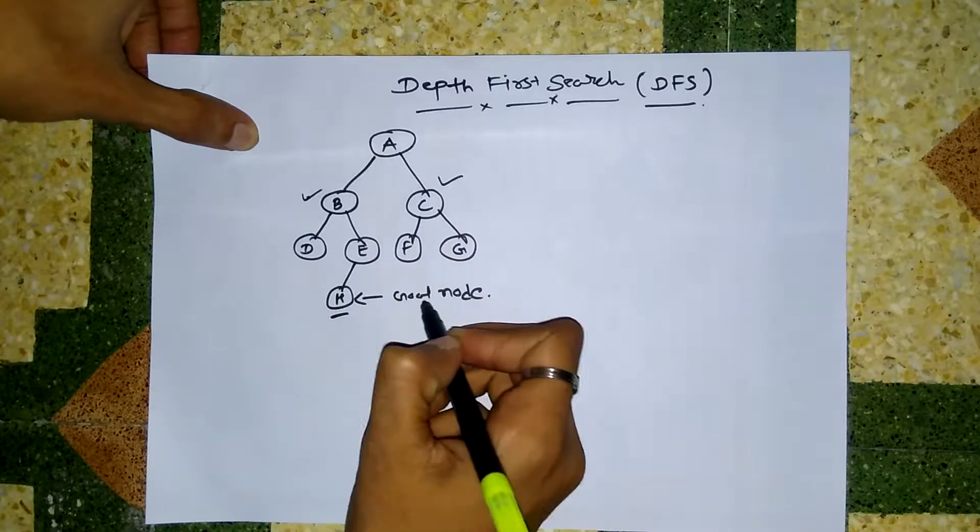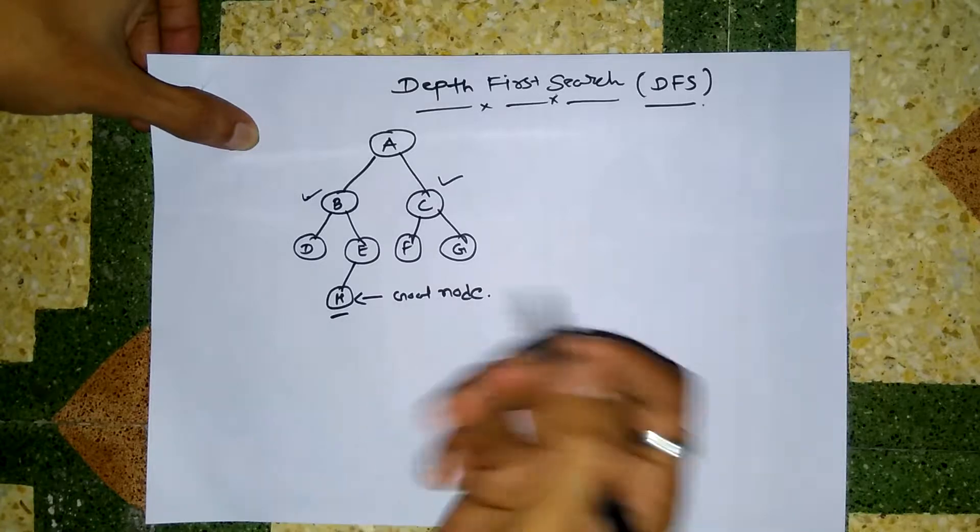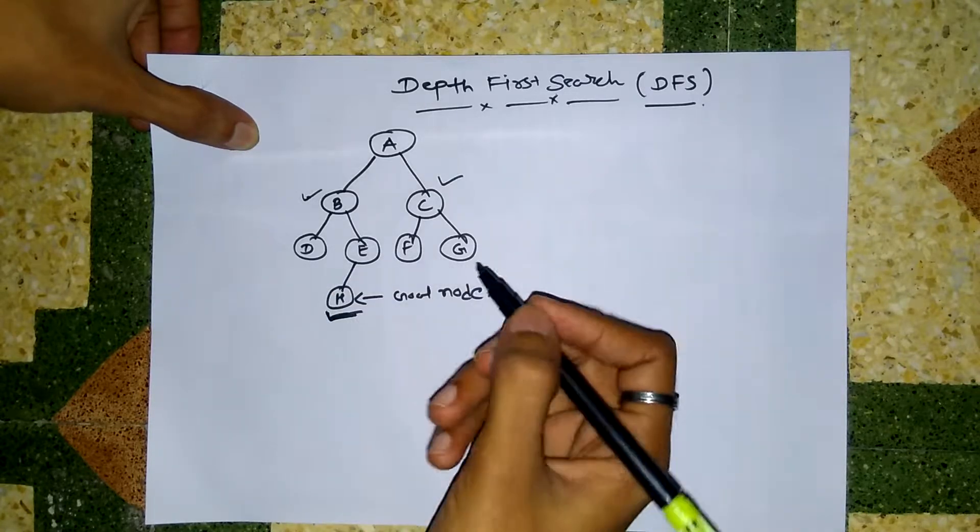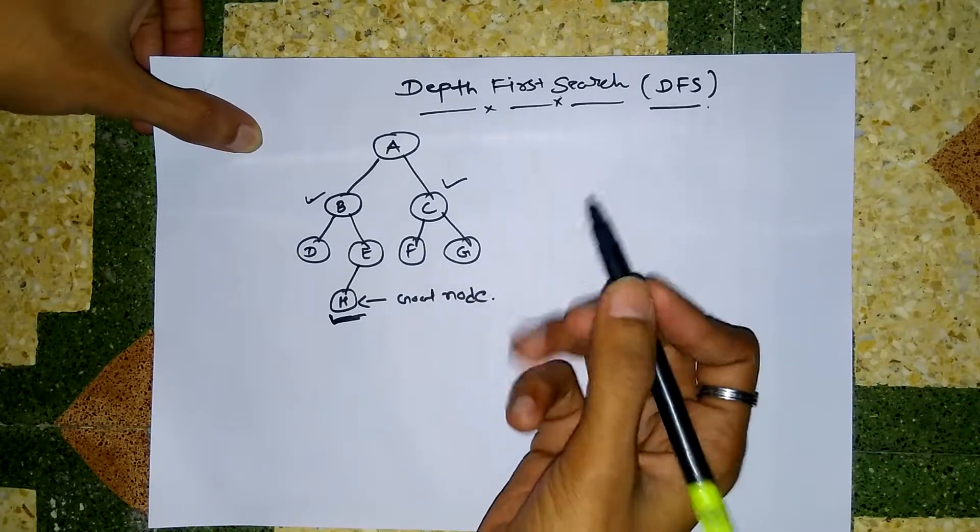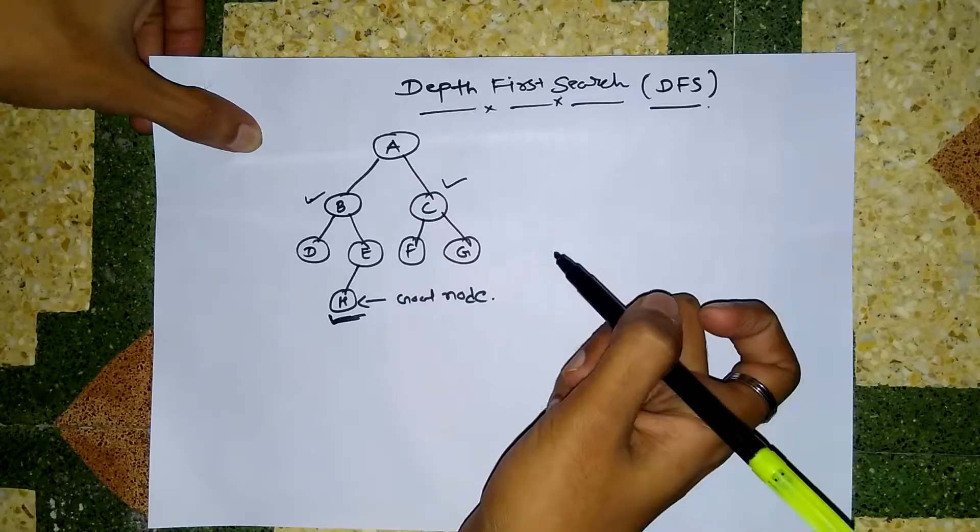If it finds the goal node, then it will return success, right? And it does not need to search in another branch for finding the goal node. That is the advantage of Depth First Search.